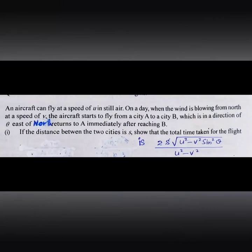On a day when the wind is blowing from north at a speed of v — now the wind velocity is also given. What is that? Velocity of wind with respect to earth. Wind is blowing means wind is blowing with respect to earth. That is from north, coming from north, with magnitude v.